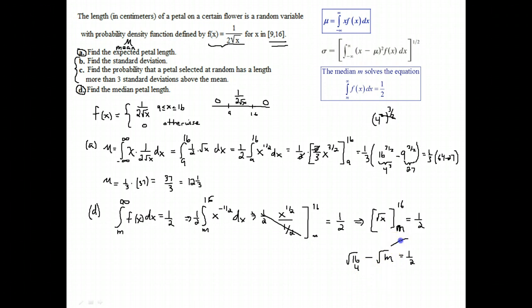Adding the root of M over and subtracting the half over, 4 minus a half is what the root of M is. That's 7 halves. So we square both sides to find out that M is 49 fourths. That's the median.